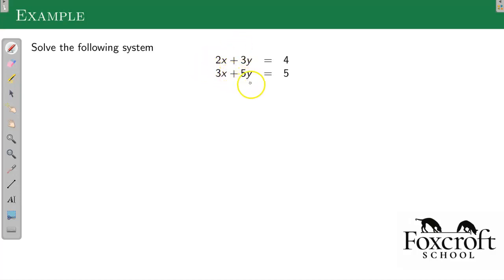I'm always going to look at the smaller number, so I'm going to look here. It looks like the x's will be easier to cancel out in this case because 2 and 3 are smaller than 3 and 5. But I need to make these things opposites, so when I add them together, they cancel out. So how do I turn 2 and 3 into the same thing?